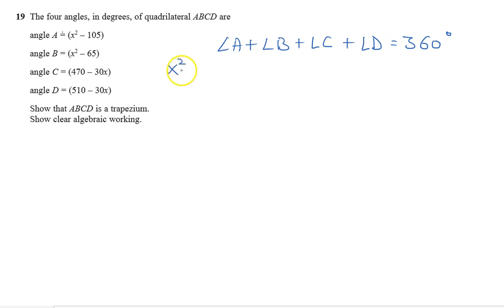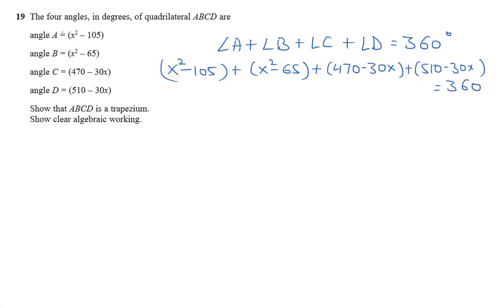So this is x square minus 105 plus x square minus 65 plus 470 minus 30x plus 510 minus 30x equals 360. There's a plus in between, so no change of sign.